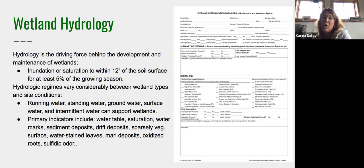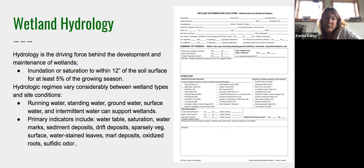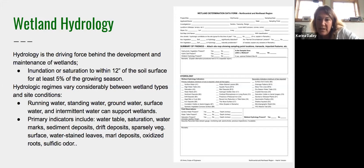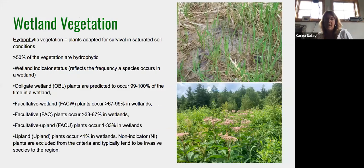Primary indicators for wetland hydrology include high water table, saturation at the surface, water marks on trees, and sediment deposits. A floodplain wetland might show drift deposits and sediment — that alone is an indicator even without saturation at the time of delineation. Other indicators include water-stained leaves, marl deposits, oxidized roots, and sulfitic odor — that rotten egg smell. The northeast regional supplement provides detailed criteria for all of these.